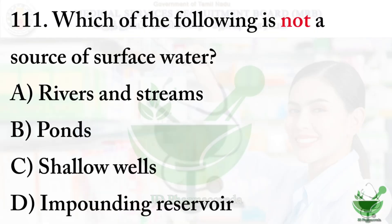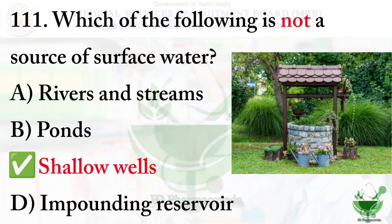Question 111: Which of the following is not a source of surface water? Option A: rivers and streams. Option B: ponds. Option C: shallow wells. Option D: impounding reservoir, that is dam. The right option is option C, shallow wells.